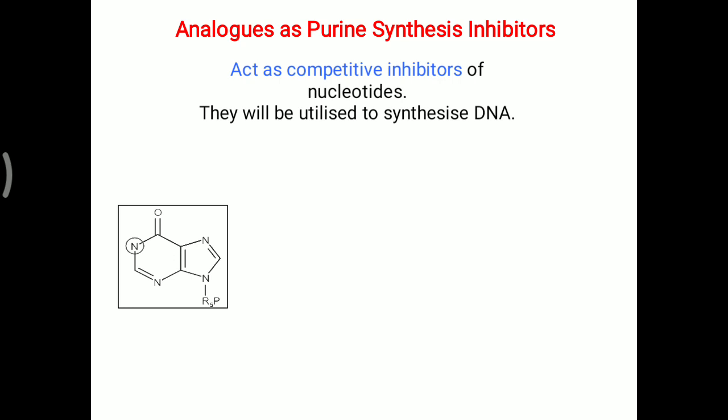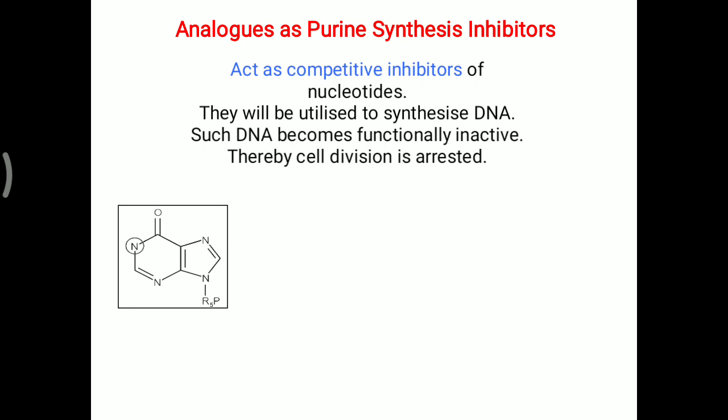When this analog is given, instead of the actual nucleotides adenine and guanine, the analog will be utilized for DNA formation. Such DNA made up of purine analogs will become functionally inactive, and thereby cell division is arrested. This is how these analogs are utilized as anti-cancer drugs - that is the main clinical importance and biological significance of purine synthesis regulation.